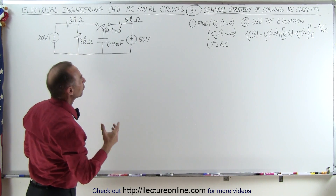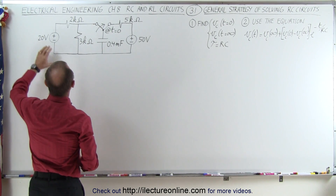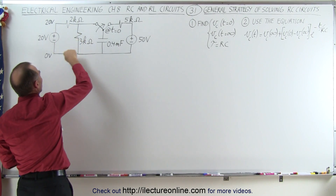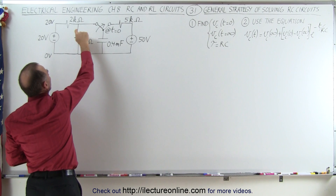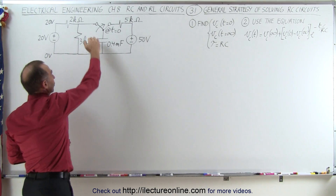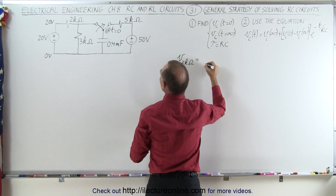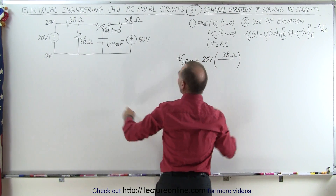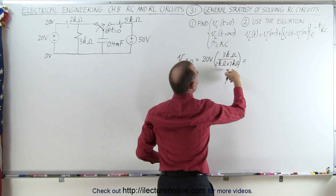We want to find the voltage across the capacitor when time equals zero, just before the switch moves. We have 20 volts on one side and zero volts at the reference. Current flows through the resistors, so the voltage across the capacitor equals the voltage across the 3 kΩ resistor. The voltage across the 3 kΩ resistor equals 20 volts times 3 kΩ divided by the total resistance of 2 kΩ plus 3 kΩ — that's three divided by five, which is 12 volts.